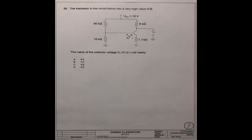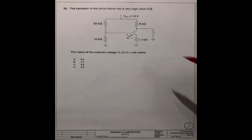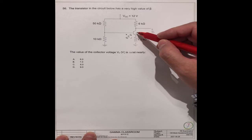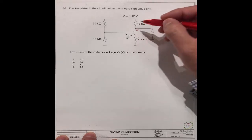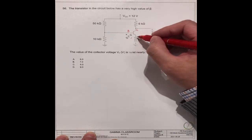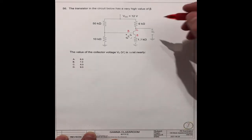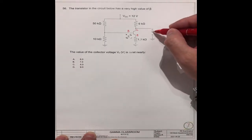Question No. 56. The transistor in the circuit below has a very high value of beta. This is a PNP transistor. The collector voltage VC is most nearly what number? We identify the collector, the base, and the emitter. The question asks what is VC at this point.